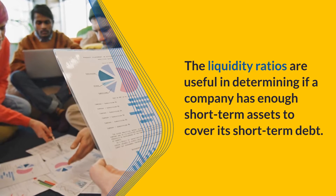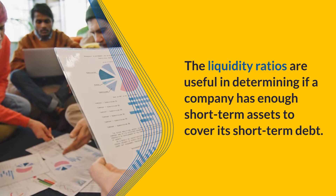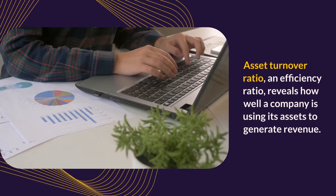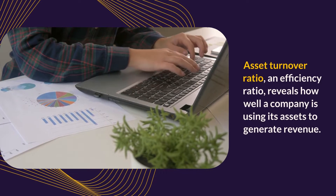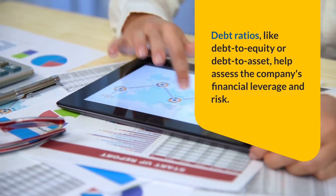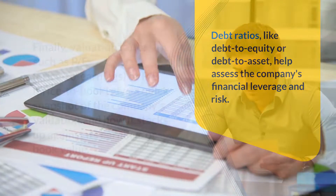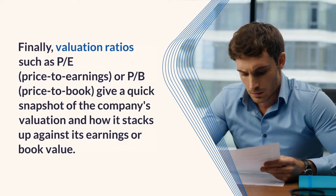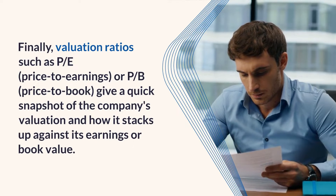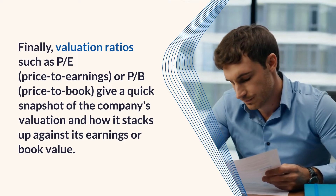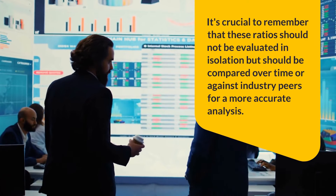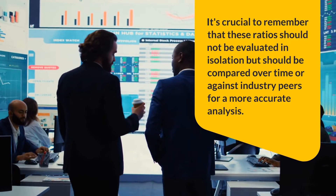Liquidity ratios, such as the current ratio or quick ratio, are useful in determining if a company has enough short-term assets to cover its short-term debt. The asset turnover ratio, an efficiency ratio, reveals how well a company is using its assets to generate revenue. Debt ratios, like debt-to-equity or debt-to-asset, help assess the company's financial leverage and risk. Finally, valuation ratios such as P/E (price-to-earnings) or P/B (price-to-book) give a quick snapshot of the company's valuation. It's crucial to remember that these ratios should be compared over time or against industry peers for a more accurate analysis.